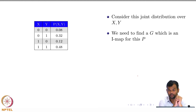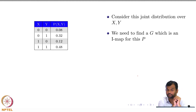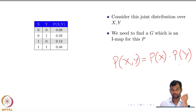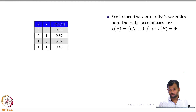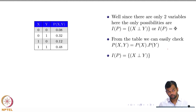What are the independences that hold in this distribution? Is X independent of Y? To verify, we find the marginals and check whether the product of the marginals equals the joint distribution — that is, whether P(X=x, Y=y) equals P(X=x)·P(Y=y) for every value X and Y can take. From the table we can easily check that this condition holds, so I(P) is {X ⊥ Y}.